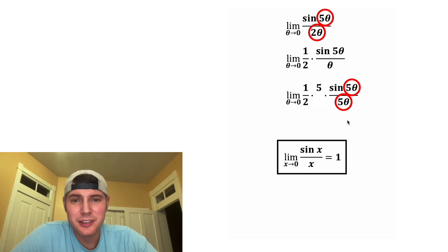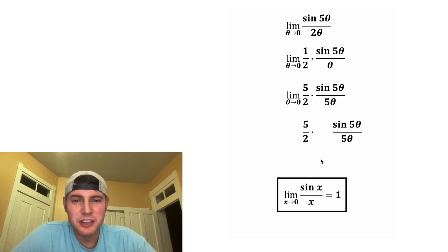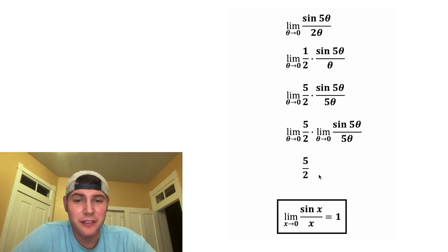So this 5 down here can join the theta, and now these match, which is what our goal was. So then we can do 1 half times 5, which is 5 halves. And then we can split these two things up and give them each their own limit. And the limit as theta approaches 0 of 5 halves is just 5 halves. There's no theta here, so it just stays 5 halves.